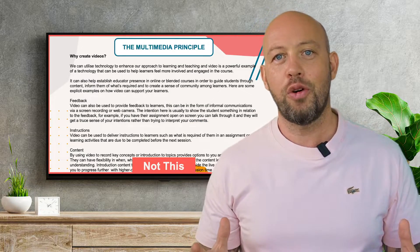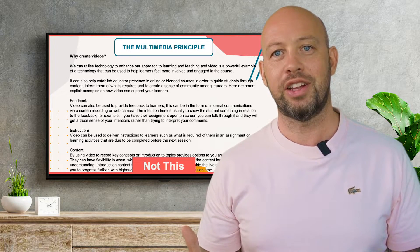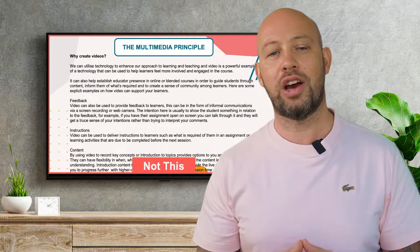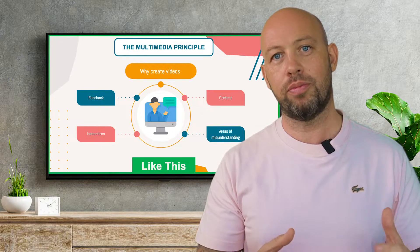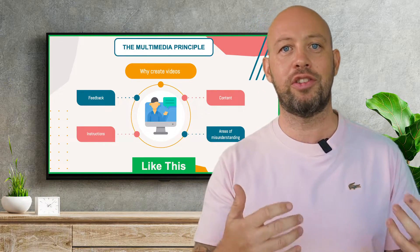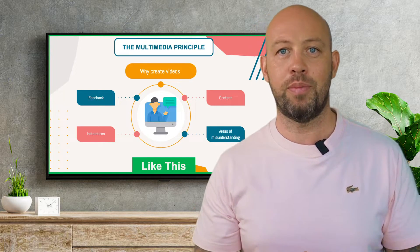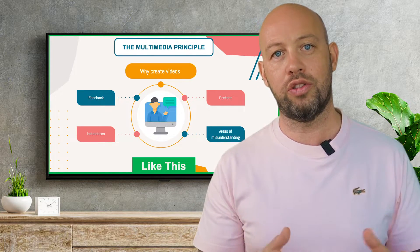His first overarching principle of multimedia learning states that we learn best with a combination of visuals — they might be pictures, animations, text and videos — and verbal information, rather than just words alone. This principle is the foundation of all of Mayer's principles: ultimately, images and words are more effective than words alone.